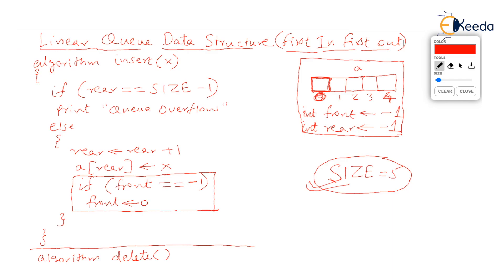Two types of operations are possible on a queue: insert, which adds a new value, and delete, which removes the frontmost element because the queue is first in first out. Let's see the algorithm to insert an element x in the queue. Assume x is 10, so we want to insert 10.